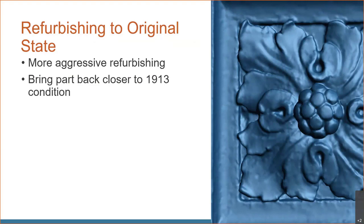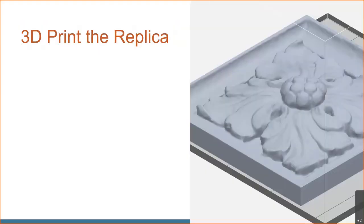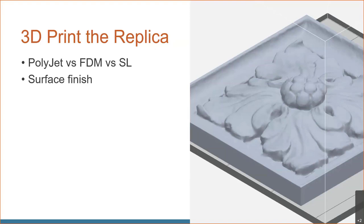Now with blemishes cleaned up and a nice, clean 3D file, we need to recreate it in the real world. There are several ways we can use 3D printing for this. We're going to look at three technologies: PolyJet, FDM (fused deposition modeling), and stereolithography. Key criteria to consider include surface finish straight off the printer, how much additional post-processing work is needed, and what materials each technology uses — since some materials can inhibit silicone curing, which would be a problem if we're making a silicone mold from the master.